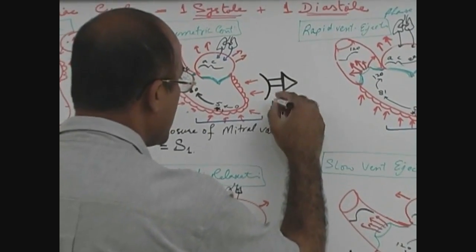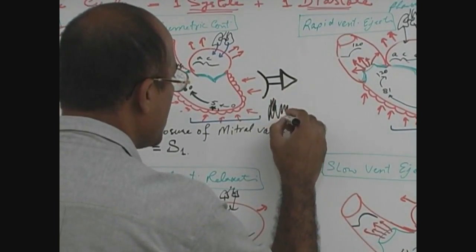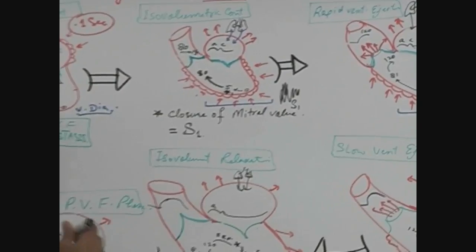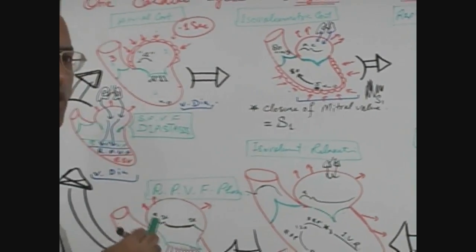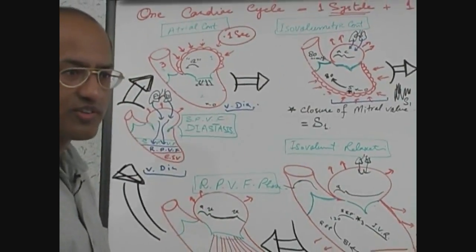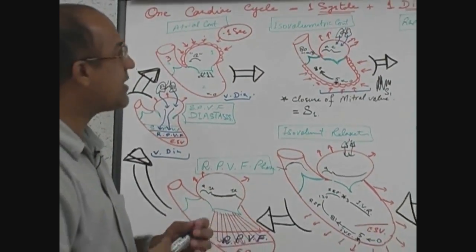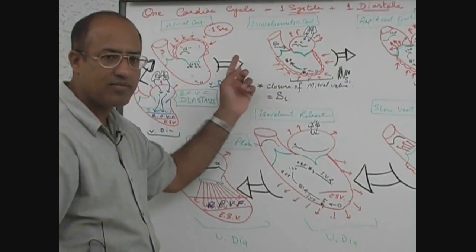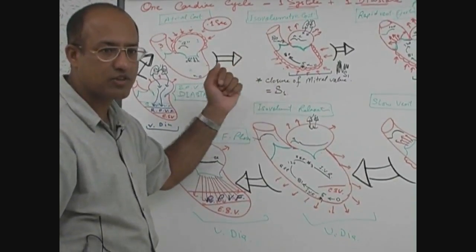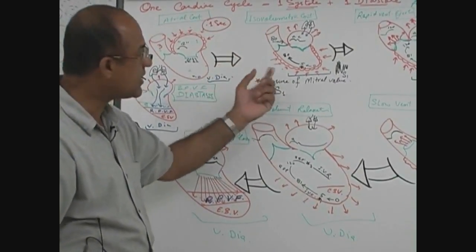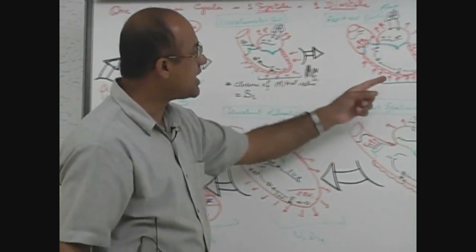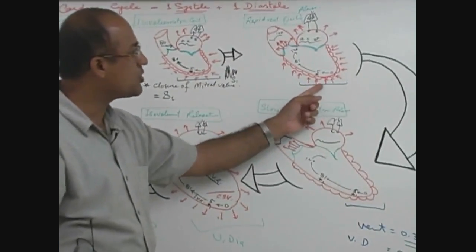The first heart sound, S1, is produced at the onset of ventricular systole. It occurs due to the closure of the mitral valve and tricuspid valve.